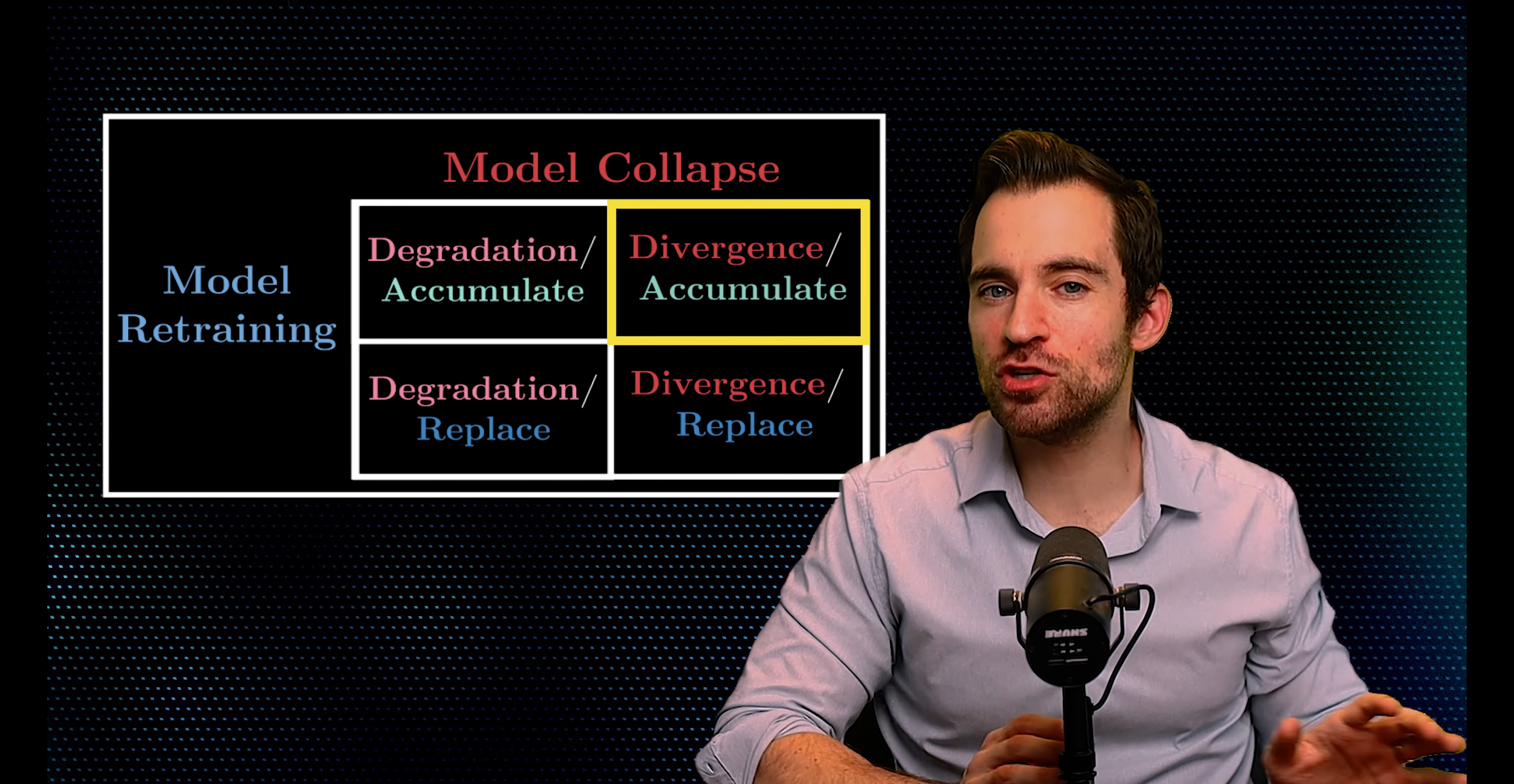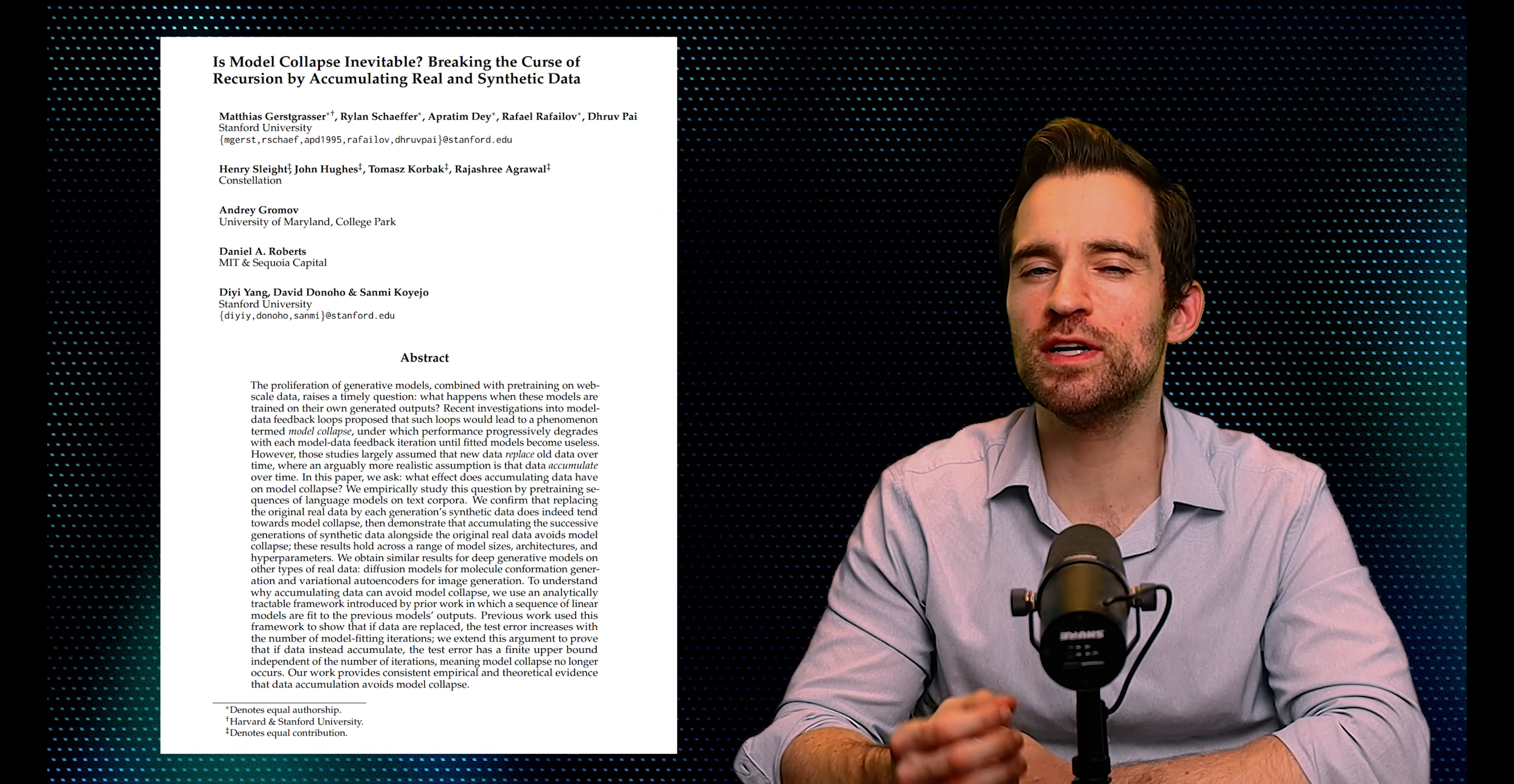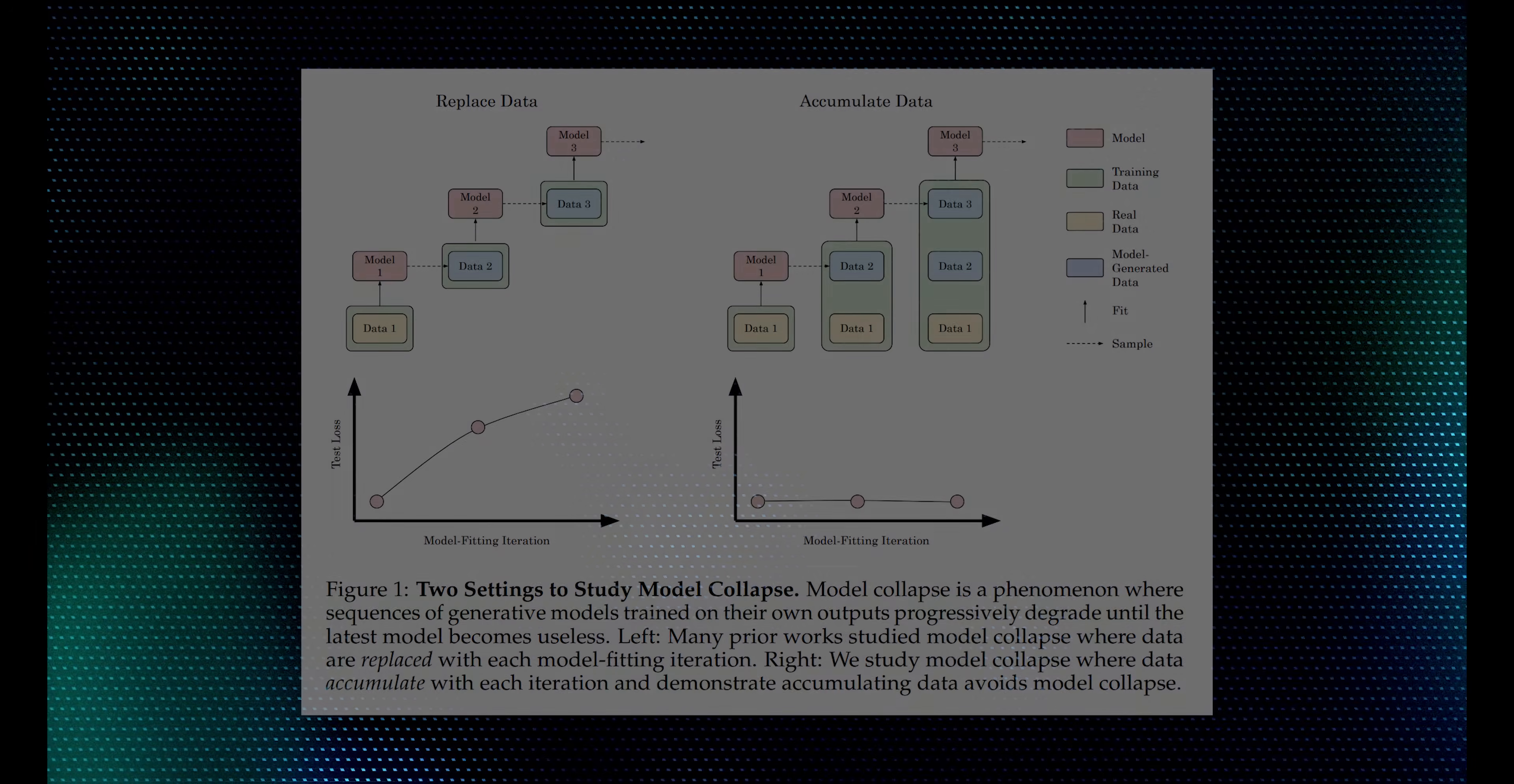It's from the Divergence Accumulate cell. The paper is called, Is Model Collapse Inevitable? Breaking the Curse of Recursion by Accumulating Real and Synthetic Data. They say that replacing real data with synthetic data is not a reasonable proxy for what we'll do in the future. Instead, they assume real data will continue to accumulate alongside synthetic data. They communicate this with this graphic.